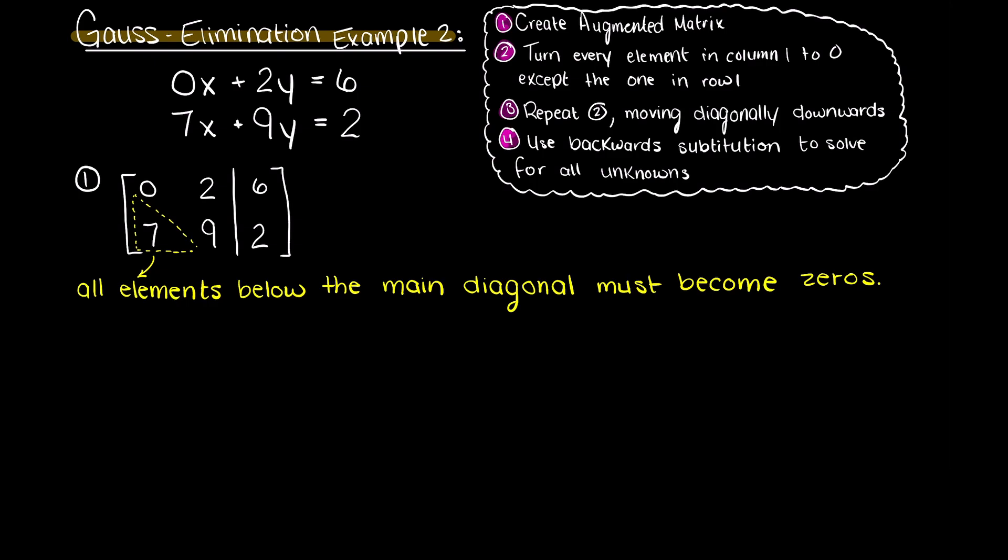If we think about this, we actually have this question mostly solved. Remember that we are allowed to move our rows around within our augmented matrix, as this is not actually changing anything with our actual equations. Therefore, we can switch rows 1 and 2 and we get the following augmented matrix.